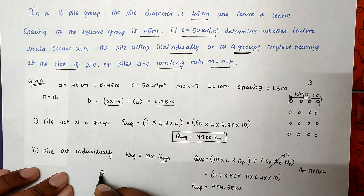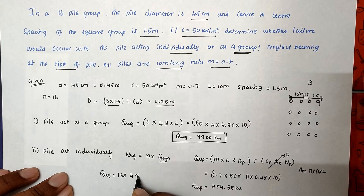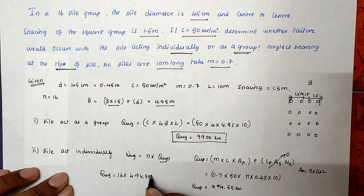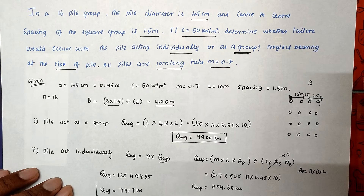Substituting into the group formula: Q_UG = 16 × 494.55 = 7917 kN.